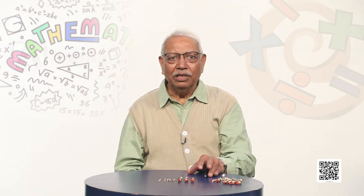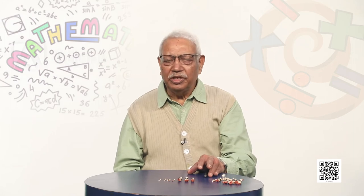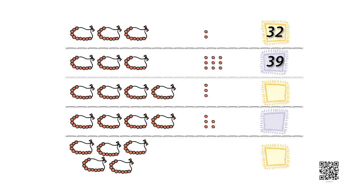Similarly, answer by counting how many motis or beads are there. Let us count the strings which have 10 beads: 10, 20, 30, 40 — so 40 beads are in strings of 10. Then how many loose beads? 1, 2, 3 — so 40, 41, 42, 43. How are we going to write it? 4 tens and 3 ones, so we write 4, 3 — 43. That way we answer the question how many.